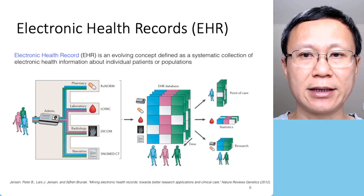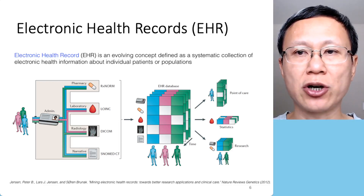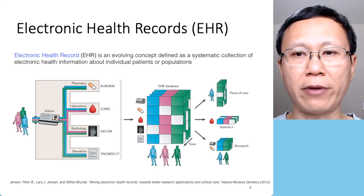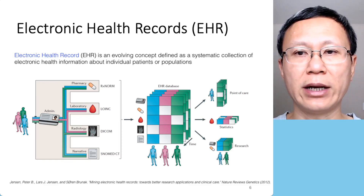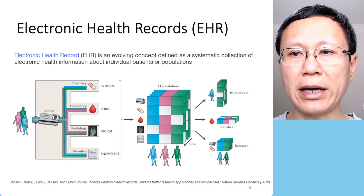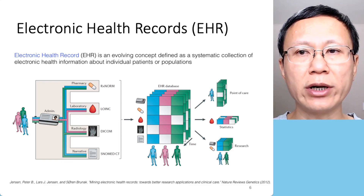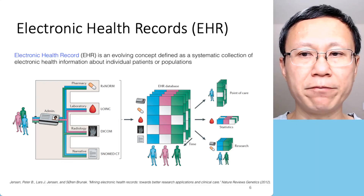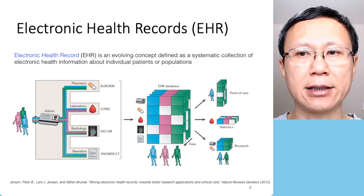Let's look at different kinds of data that may be useful for precision medicine. First, you may think about electronic health records, or EHR. Electronic health record is an evolving concept defined as a systematic collection of electronic health information about individual patients or populations. It is so important for our medical purposes. But at the same time, electronic health records are highly distributed in different locations — for example, different hospitals, different practitioners — and it is very hard to connect them together. Even for one patient, it is a great challenge to collect all the related healthcare records and put them in electronic form.